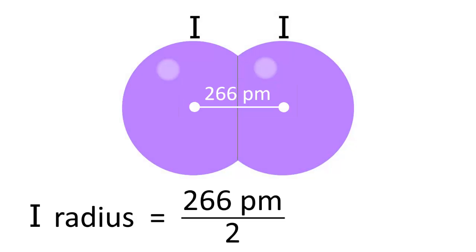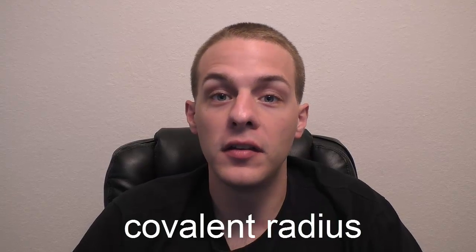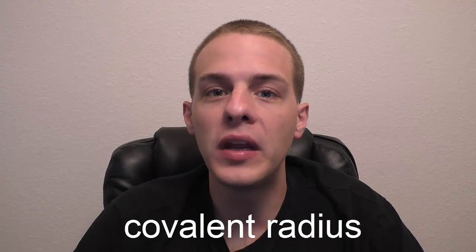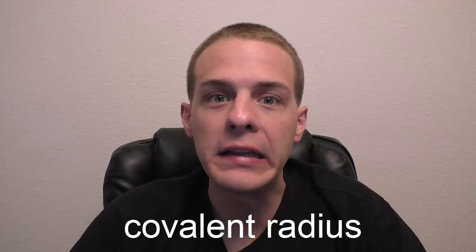Dividing this by two gives us an atomic radius of 133 picometers for each iodine atom. This type of atomic radius is called a covalent radius, since its value was obtained using two atoms that were covalently bonded to one another.